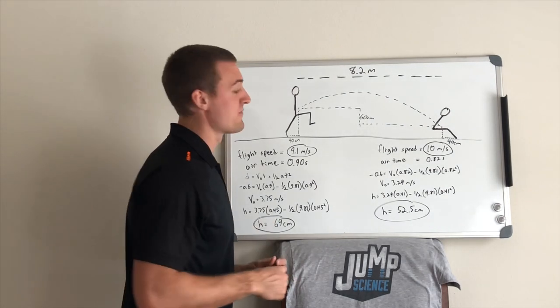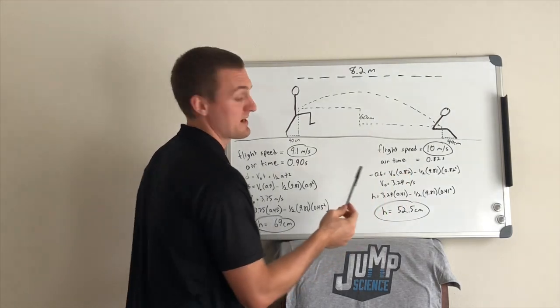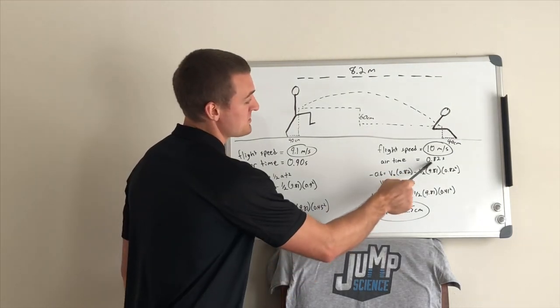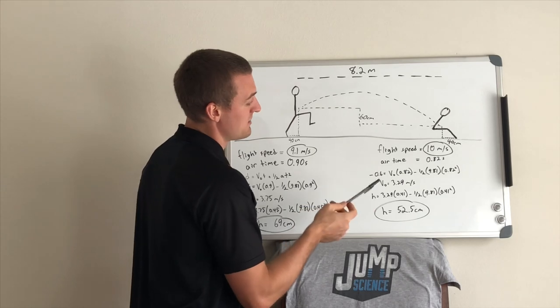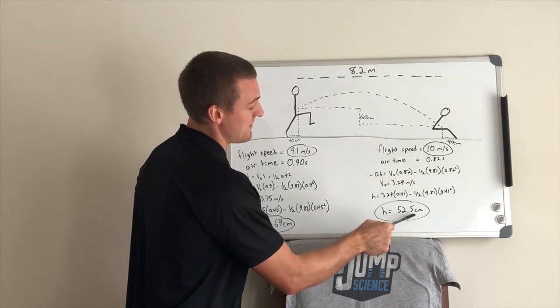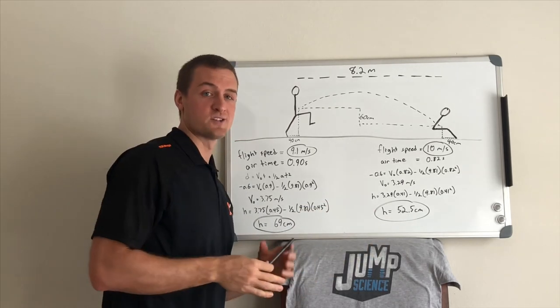Another example, this would be a very high flight speed, 10 meters per second. That's going to require 0.82 seconds in the air. And that would come from a 52.5 centimeter vertical jump.